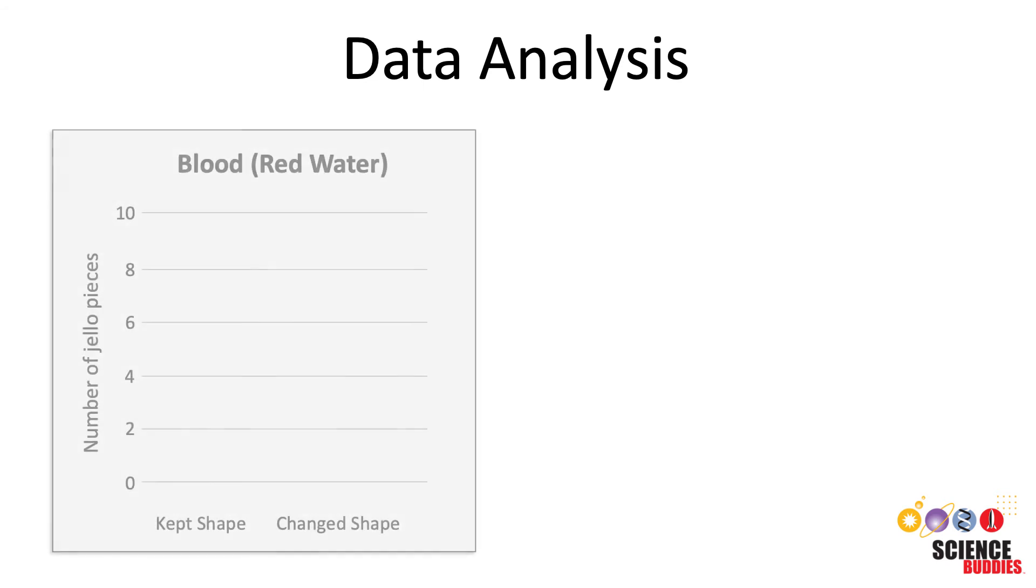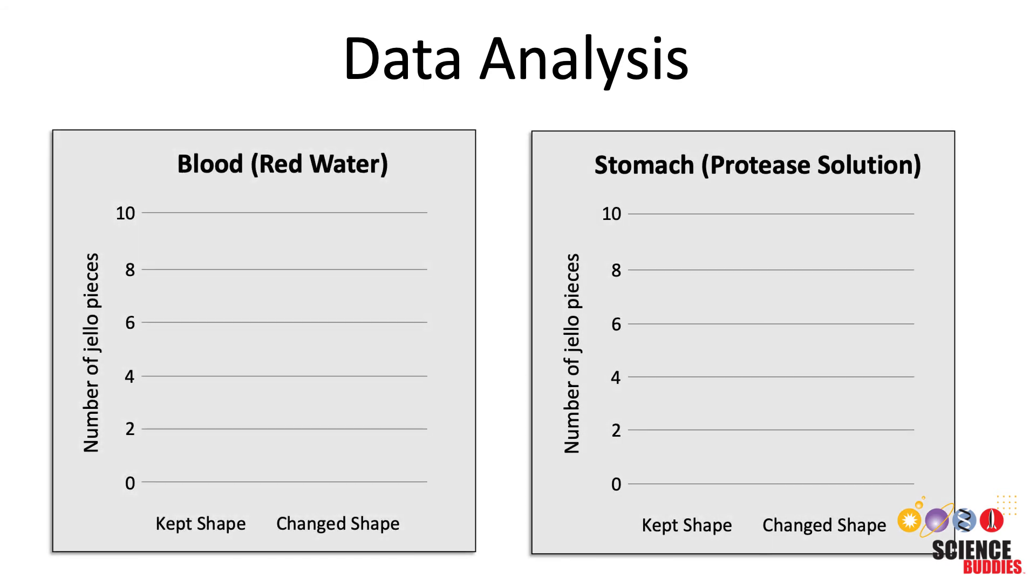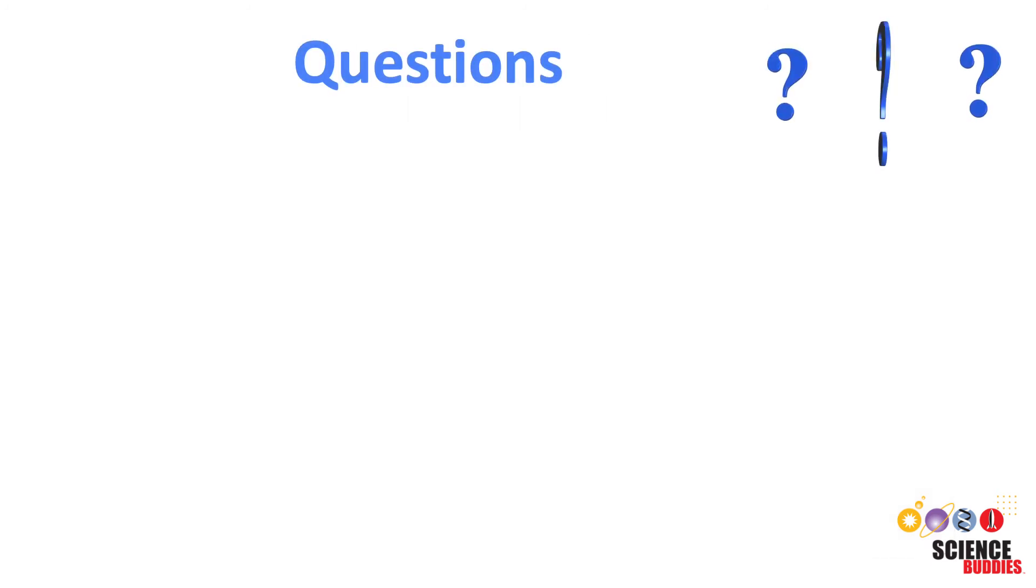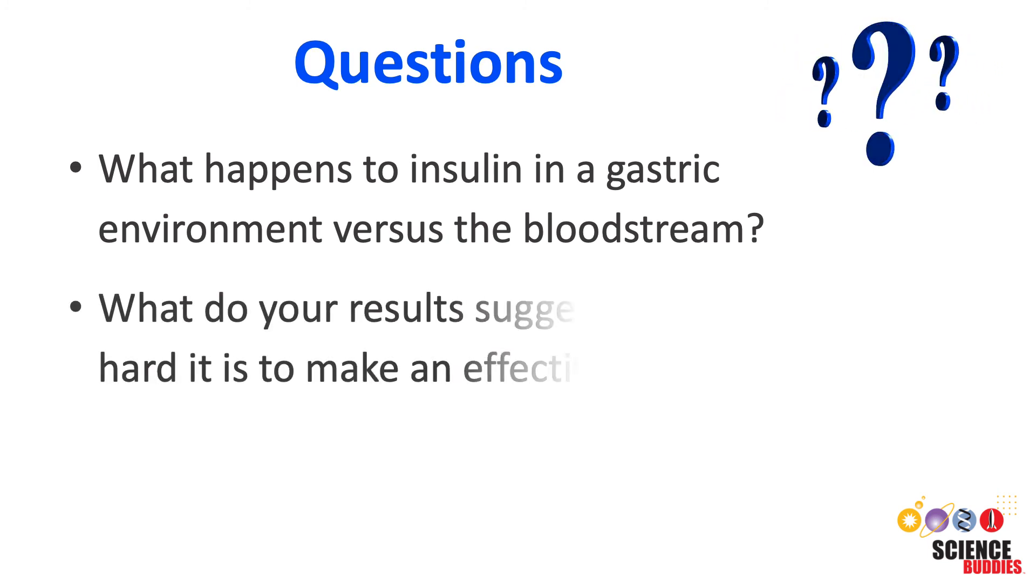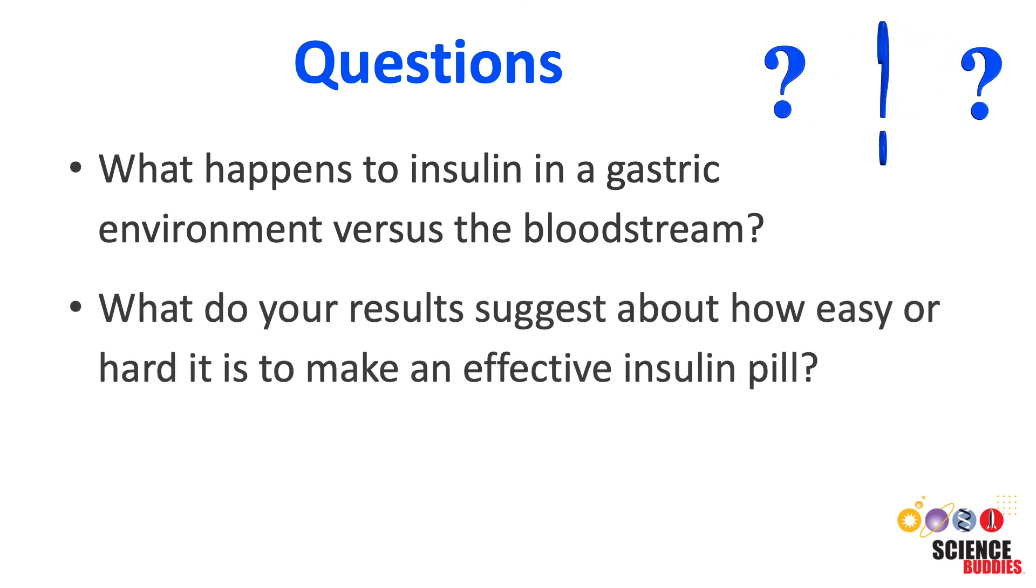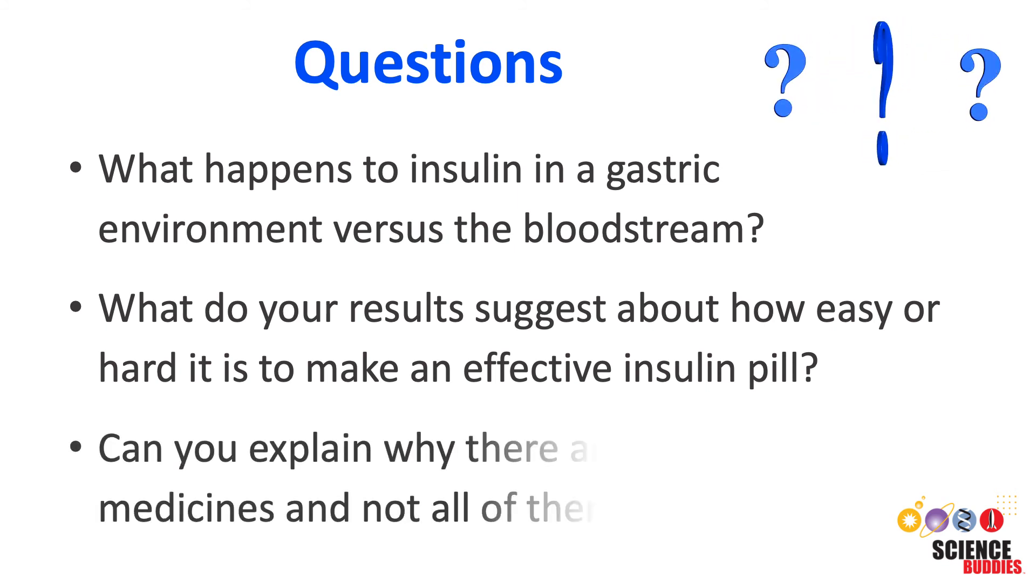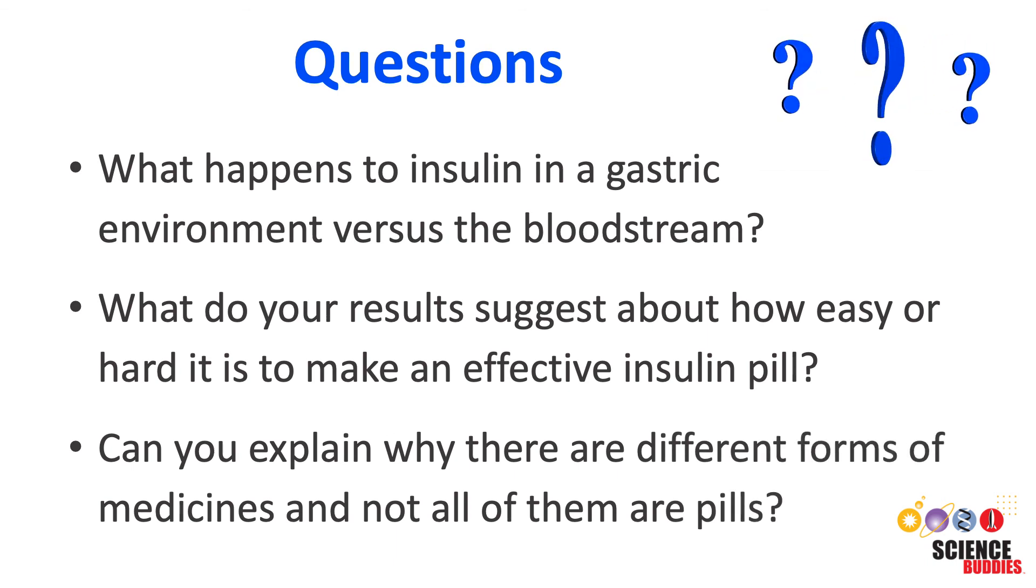Compare how many jello pieces kept their shape in both testing scenarios. Use your data to visualize your results in a bar graph. Looking at your results, you should be able to answer the following questions. Can you tell from your data what happens to insulin in a gastric environment versus the bloodstream? What do your results suggest about how easy or hard it is to make an effective insulin pill? And finally, can you now explain why there are different forms of medicines and not all of them are pills?